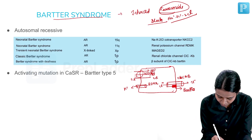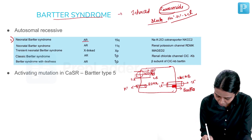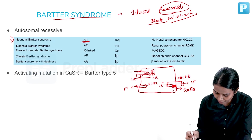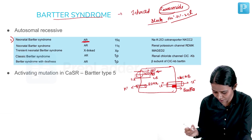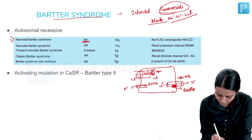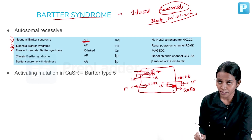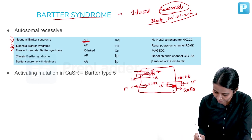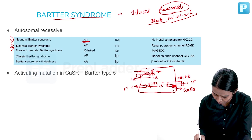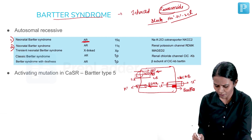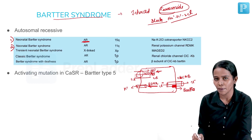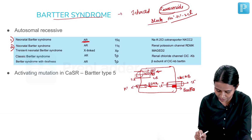The first type is neonatal Bartter syndrome, which is autosomal recessive, caused by a defect in the NKCC2 transporter. The second type is also neonatal Bartter syndrome, caused by a defect in the ROMK channel. The third is called transient neonatal Bartter, which is X-linked and mostly recovers by itself.